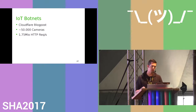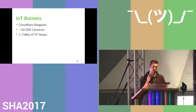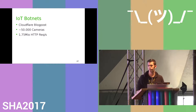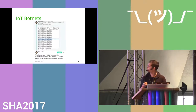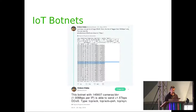There are also IoT botnets, which have been in the media a lot. A Cloudflare blog post described about 50,000 cameras attacking them at 1.75 million HTTP requests per second. OVH was also attacked by about 150,000 cameras and DVRs, and that botnet was able to generate 1.5 terabytes of traffic per second.